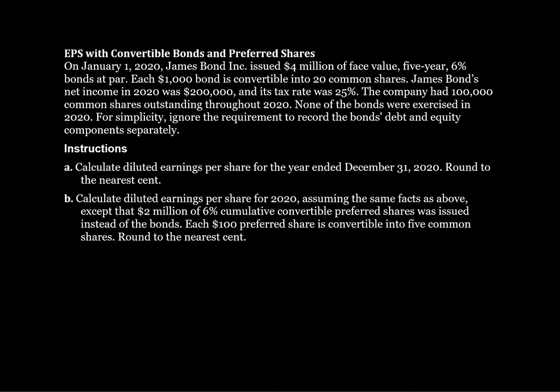The first thing we're asked to do is calculate earnings per share for the year ended December 31, 2020. Consider the statement that none of the bonds were exercised in 2020 — it doesn't impact the calculation of diluted EPS, because we calculate diluted earnings per share on a what-if method. Even though these bonds are not being converted into equity, the what-if method says: if they were converted at the soonest possible point, this is what would happen to earnings per share. We need to consider what's diluted versus anti-dilutive. If diluted EPS is higher than basic EPS, we show the same number for both — we'll never show a higher number for diluted EPS. Diluted earnings per share has to be lower.